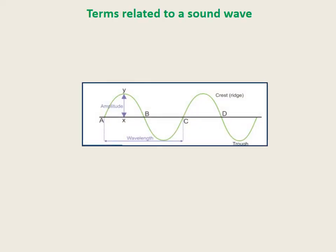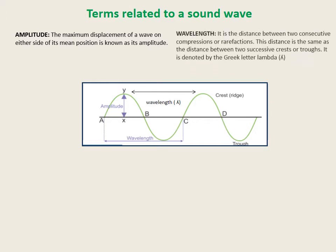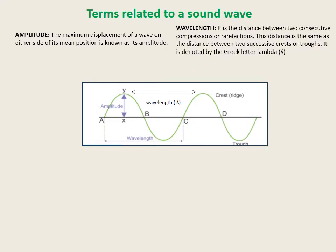Terms related to a sound wave. Amplitude: the maximum displacement of a wave on either side of its mean position is known as its amplitude. Wavelength: it is the distance between two consecutive compressions or rarefactions. This distance is the same as the distance between two successive crests or troughs. It is denoted by the Greek letter lambda.